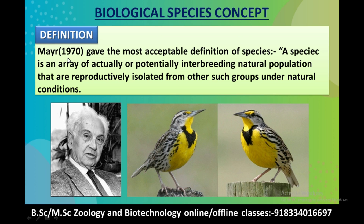Mayr in 1970 gave the most acceptable definition of species. A species is an array of actually or potentially interbreeding natural populations that are reproductively isolated from other such groups under natural conditions. This is the definition.